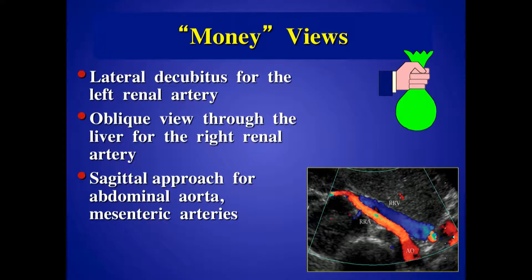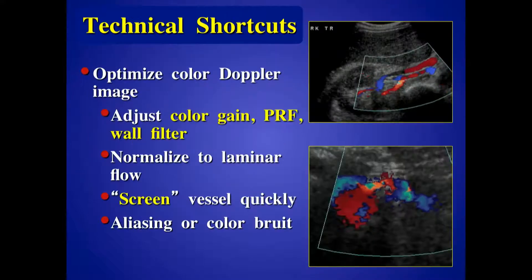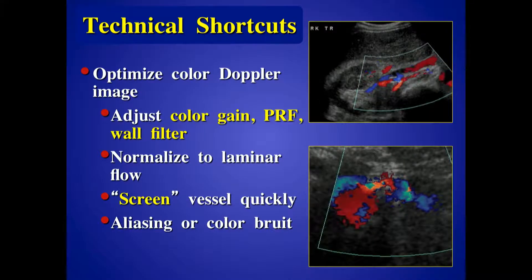For the mesenteric arteries, it's a little more challenging because you tend to go midline. You can adjust the perspective to find the abdominal aorta and the branches coming off, but we tend to use a longitudinal approach, which requires having less bowel gas — which is why we fast the patient prior to the study. Adjusting the color gain, the PRF, and the wall filter are really key, adjusted for that patient.